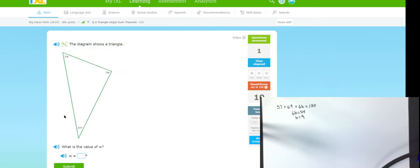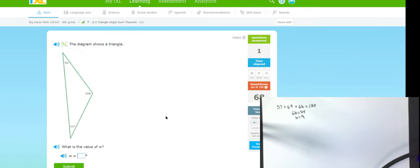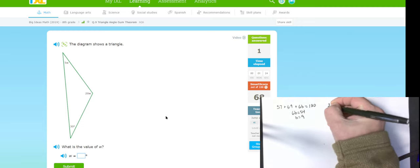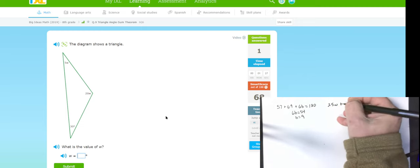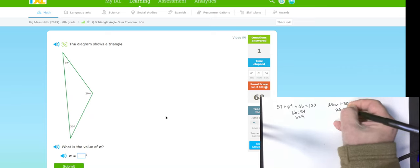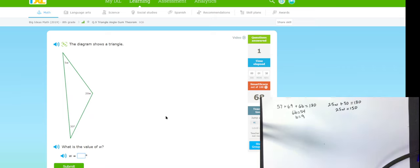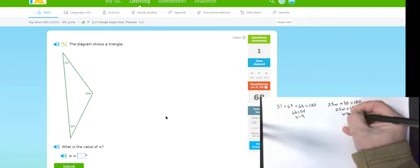So those are level one questions. Let's jump to level two. This one says find the value of W. I have 25W plus 30 has to add up to 180. That means 25W is 150. Divide 150 divided by 25 and I get W is 6.